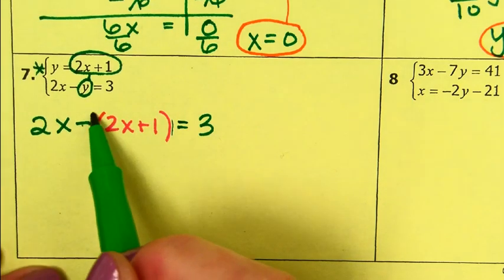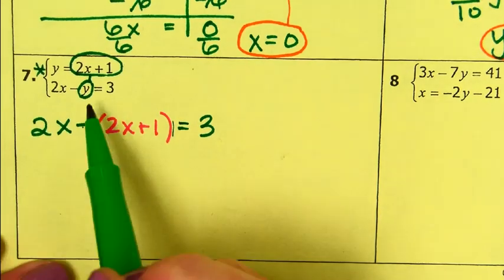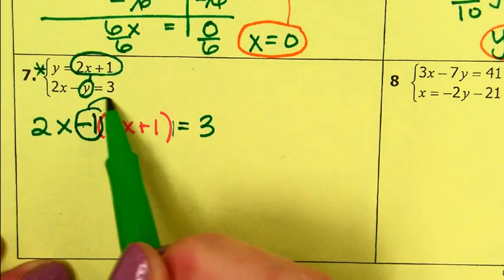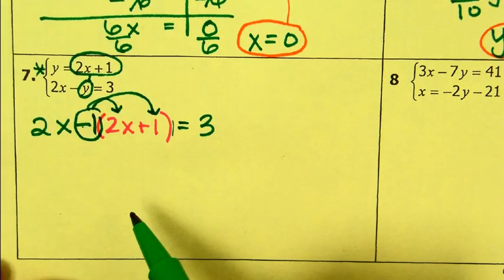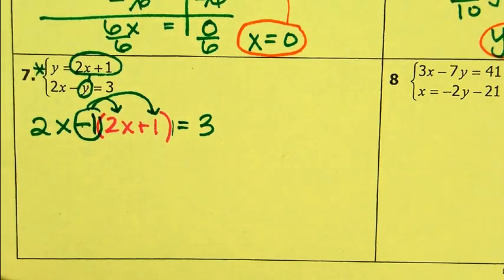The way I show that happening is by putting my negative 1 in front here and distributing a negative 1 to everything inside. Subtracting something is like taking the opposite of it.